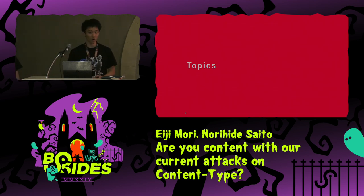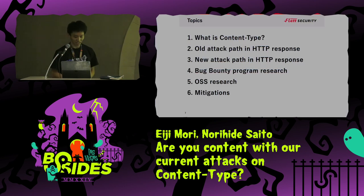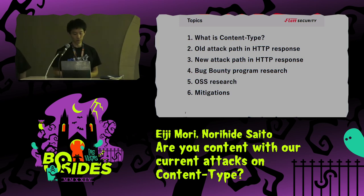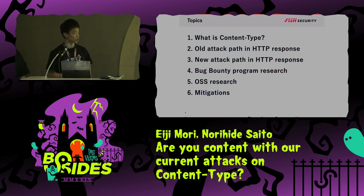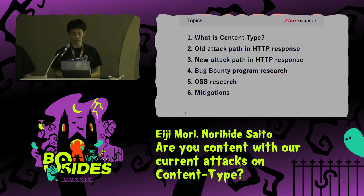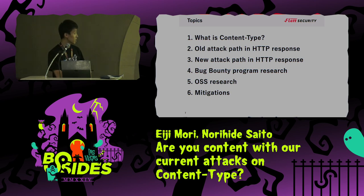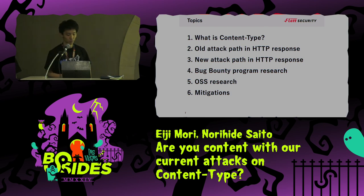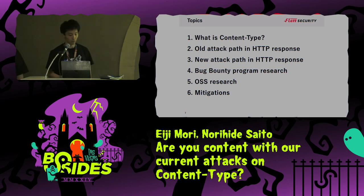Here's today's table of contents. First, we'll explain content type. Next, we'll explain the old attack vectors and show how HTTP responses were difficult to change. After that, we will show how the new attack vector we discovered makes it easier to change HTTP responses. Then, we'll show some deficiencies with bug bounty problems and OSS using this attack path. Finally, we'll present the mitigations.